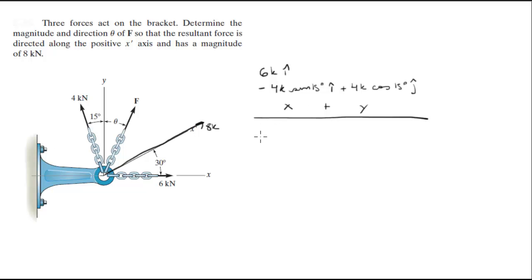Now, the resultant force is going to be 8k cosine of 30 degrees in the i direction plus 8k sine of 30 degrees in the j direction. So we add the x's together to form our first equation.